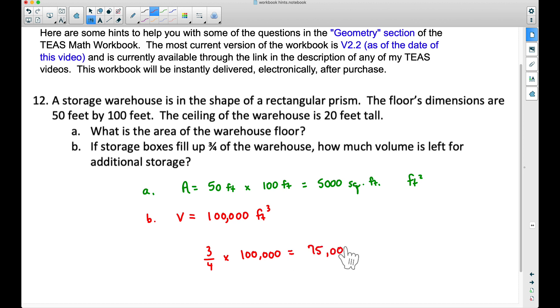So this is how much of the volume is full of storage boxes. Now the question says how much volume is left for additional storage. This 75,000 cubic feet here is what is already being used or filled up with the storage boxes. The difference between the whole volume and the volume used will be the volume that we have left. And the difference between 100,000 and 75,000 is 25,000 cubic feet. This is how much cubic feet, this is how much volume we have left.